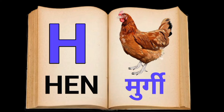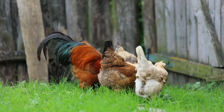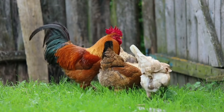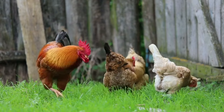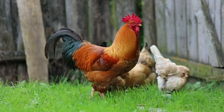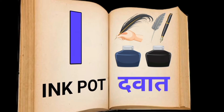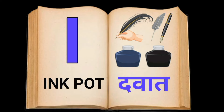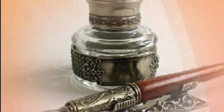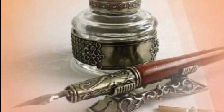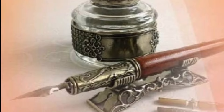H for Hen, Hen means murgi. I for Ink Pot, Ink Pot means dawaar.